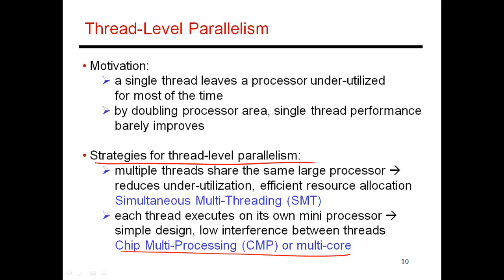The second option is to have multiple threads running together on the same core, and that's called simultaneous multi-threading. The reason you want to do this is because if you look at how a single core itself behaves, you'll notice that it is heavily underutilized a lot of the time. For example, you may have built a core with an issue width of four, and if you look at how many times all four slots are utilized, you'll see that this happens very rarely.